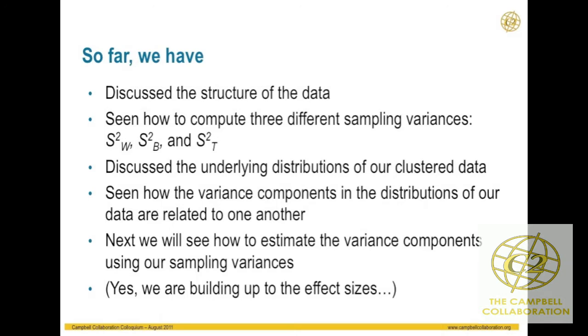We have individual observations nested within clusters — schools, treatment centers, or clinics — and it's those clusters that get randomly assigned to treatment or control. Each cluster has means, and then we take the grand mean of the treatment and control group. We need an effect size that gives some indication of the overall difference between treatment and control while also being sensitive to the nature of the data.